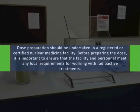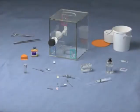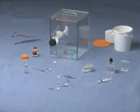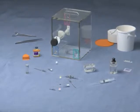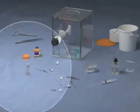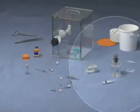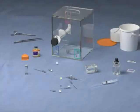Dose preparation should be undertaken in a registered or certified nuclear medicine facility. Before preparing the dose, it is important to ensure that the facility and personnel meet any local requirements for working with radioactive treatments. Dedicated accessories for the preparation of SIRSPHERES Microspheres have been designed to meet the general principles of radiation safety and to assist with the handling of the product. The patient-specific activity is drawn from the shipping vial and transferred into the V-vial, which sits in its own acrylic V-vial holder. The V-vial holder can then be transported to the angiography suite where the patient will be treated.